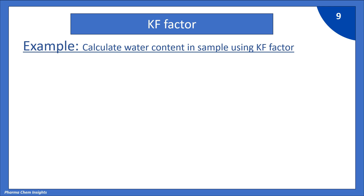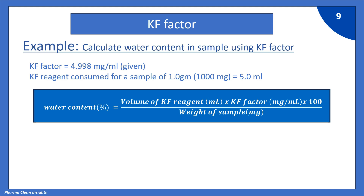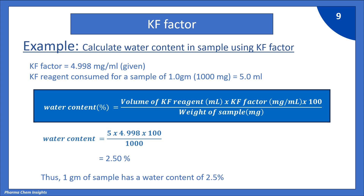Now, let us see the example to calculate water content in a sample using KF factor. KF factor = 4.998 mg/ml (given). KF reagent consumed for a sample of 1 gram (1000 mg) = 5.0 ml. The formula to find water content is: water content (%) = volume of KF reagent (ml) × KF factor (mg/ml) × 100 ÷ weight of sample (mg). Putting the values: 5 × 4.998 × 100 ÷ 1000 = 2.50%. Thus, 1 gram of sample has a water content of 2.5%.